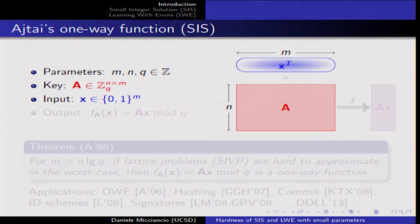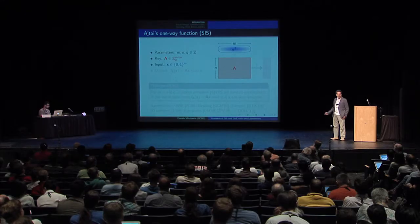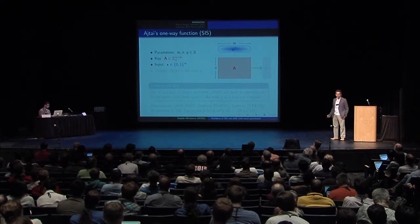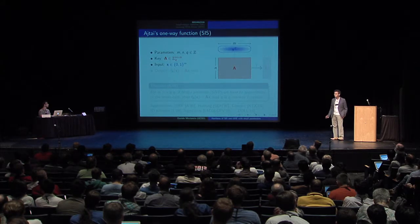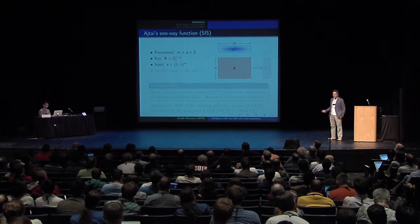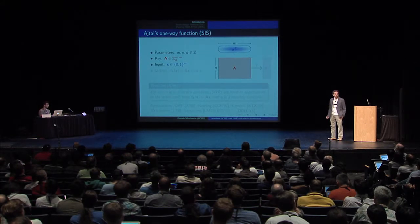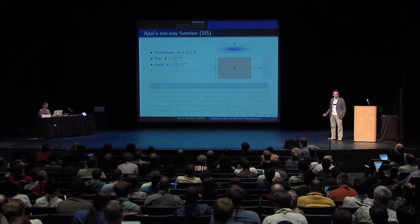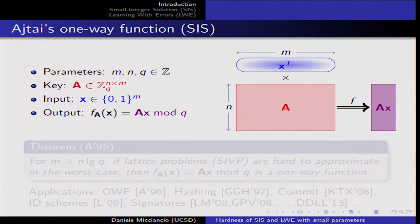Most lattice cryptography used today is based on a one-way function, or its variants, proposed by Ajtai some time ago. The function is described by a matrix A with integer entries chosen uniformly at random modulo q. The input is a short vector x, and the function simply performs a vector-matrix multiplication, outputting Ax.